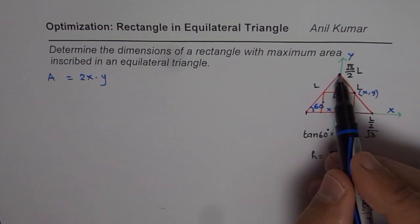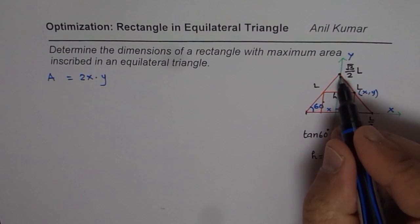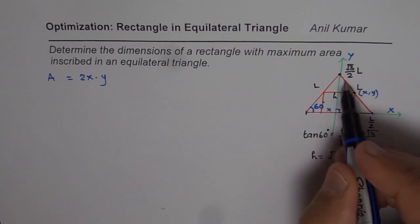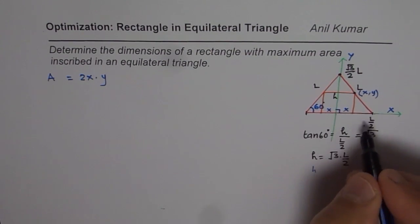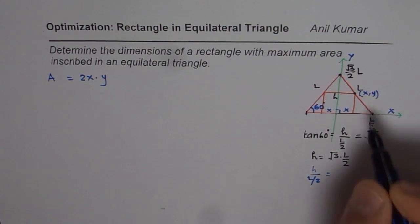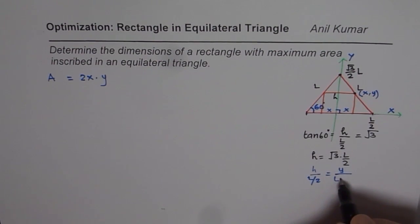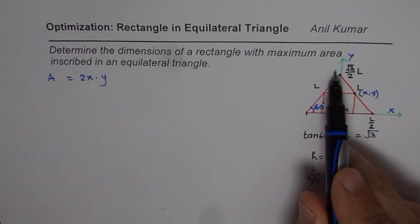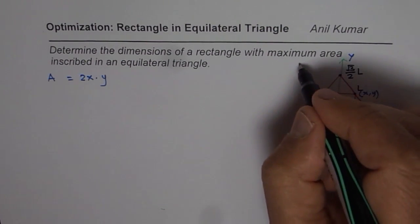The idea is to relate the two variables. One approach is using similar triangles: the big triangle is similar to the small triangle above the rectangle, so you can write ratios — height over L/2 equals Y over (L/2 minus X). That gives Y in terms of X. Alternatively, you can get the equation of the slanted line and relate Y in terms of X. That is the approach I am going to take in this video, and I really prefer it.